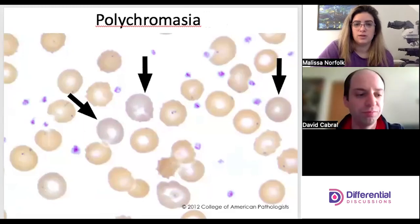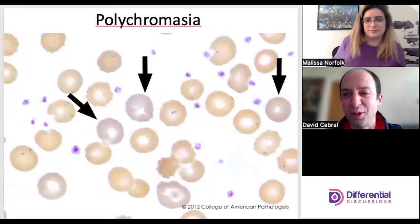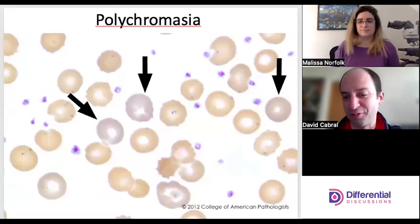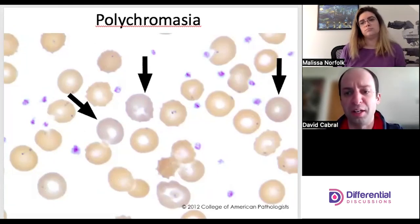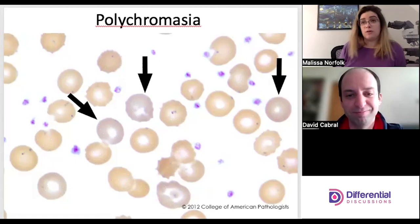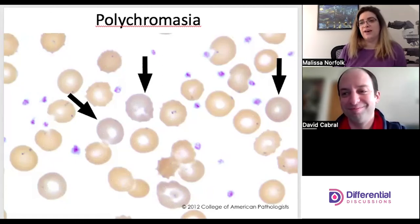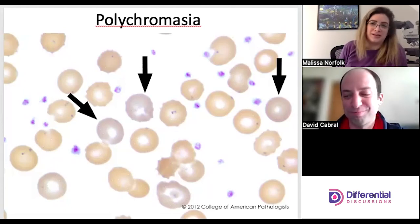Polychromasia — multiple colors in our cell. A little blue and a little red gives this purplish color. These generally represent shift reticulocytes — stress reticulocytes put out when recovering from an anemia. Polychromasia is classically overcalled in my experience. Stick to your institution's grading schema — whether it's five to ten per field or one to five per field — and only call what is consistent across the peripheral blood smear, not just one field.